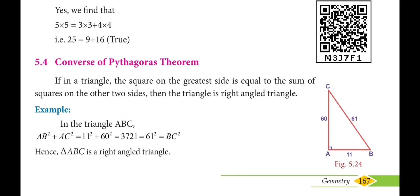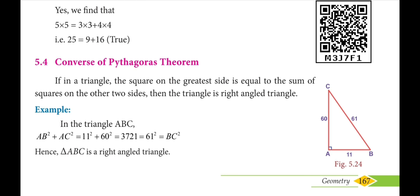Converse of Pythagoras theorem: if in a triangle the square of the greater side is equal to the sum of squares of the other two sides, the triangle is right-angled. Here 61 is the greater side. AB² + AC² equals 11² + 60², and when we square these we get 3721, which equals 61². This is the converse of Pythagoras theorem.